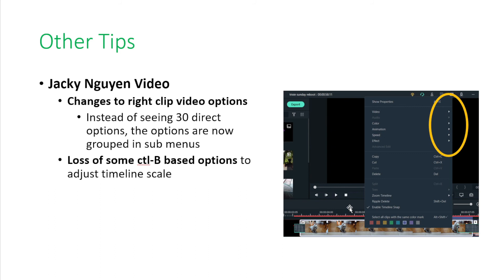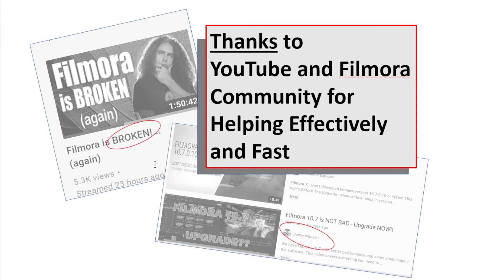Jack Noyan also has a video that I've linked below. You'll notice some other changes in 10.7 — it used to be that if you right-clicked on a video you got about 30 options right in your face, and now those 30 options are grouped into about six panels, so it looks more compact. Jacky Noyan talks about some Control-B based options for adjusting your timeline; he says they don't work anymore, and I found the timeline was pretty jumpy to control. But the bottom line is, thanks to the YouTube and Filmora community for helping find a fast and effective solution to my problem. Thank you.